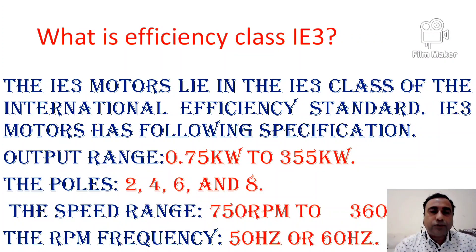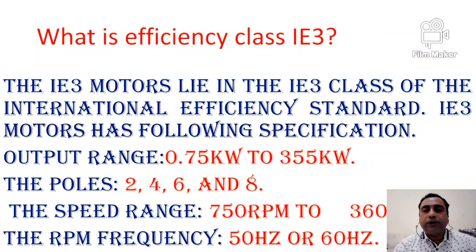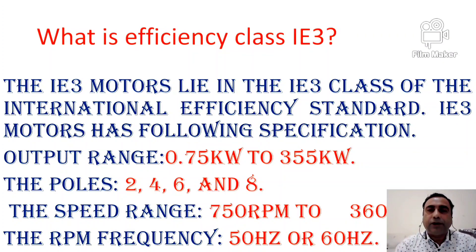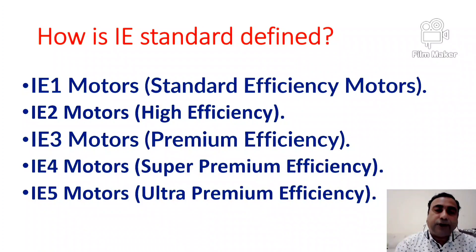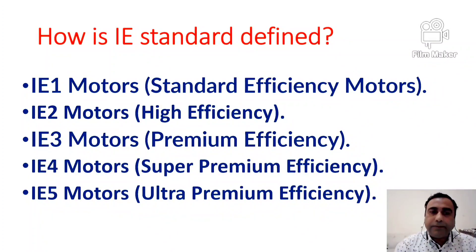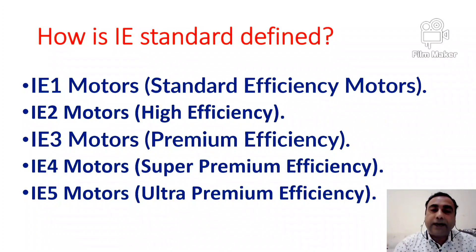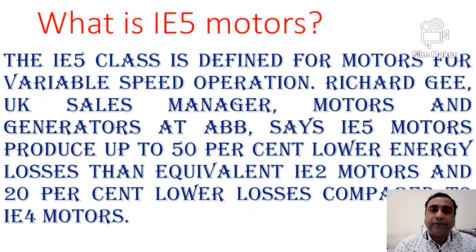they are two pole, four pole, six pole and eight poles as well. Speed range 750 rpm to 3600 rpm and the frequency 50 hertz or 60 hertz. IE standards are defined as: IE1 — standard efficiency motor, IE2 — high efficiency, IE3 — premium efficiency, IE4 — super premium efficiency, and IE5 — ultra premium efficiency.